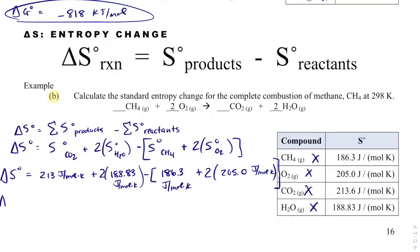And then I want to get each side. So I have my products and then I have my reactants. My products add up to be 591.26 joules per mole times Kelvin. Then my reactants add up to be 596.3 joules per mole Kelvin. And so delta G or delta S, excuse me, ends up being negative 5.04 joules per mole Kelvin.